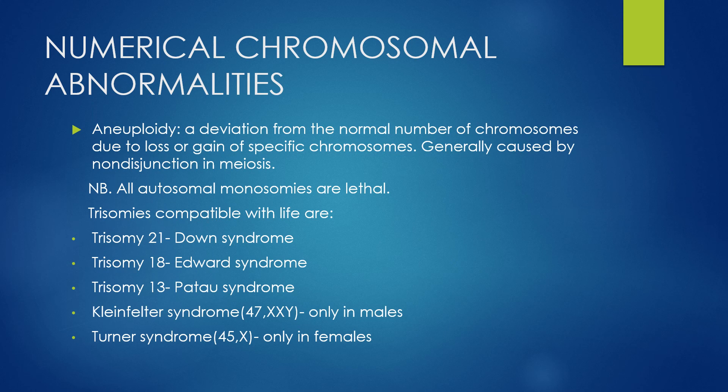In aneuploidy, there is a deviation from the normal number of chromosomes due to a loss or gain of a specific chromosome, usually occurring as a result of non-disjunction in meiosis. All autosomal monosomies are lethal. Monosomy means loss of a particular chromosome; trisomy means gain of a particular chromosome. Trisomies compatible with life include trisomy 21 (Down syndrome), trisomy 18 (Edwards syndrome), and trisomy 13 (Patau syndrome). An example of sex chromosome trisomy is Klinefelter syndrome in males, where the male has an extra X chromosome. An example of sex chromosome monosomy is Turner syndrome in females, where the female loses one X chromosome.